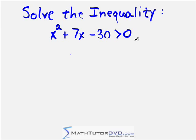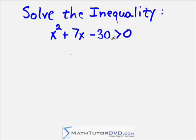The way you tackle these things is you're really trying to figure out what it looks like on the number line and figure out what regions of the number line this whole thing is satisfied — in other words, what regions on the number line cause this thing to be greater than zero. So the way you proceed to begin with is pretend it's just an equation. Just forget about the greater than sign and pretend it's an equation.